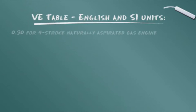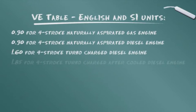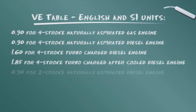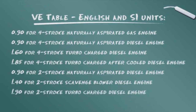Choose the volumetric efficiency value from this table which matches your application. These values can be used for either English or SI calculations. Please note that these values are guidelines — electronic controls on modern engines can raise VE ratings to 2.0 or greater. This is one of the reasons why it is best to use the manufacturer ratings when they are available.